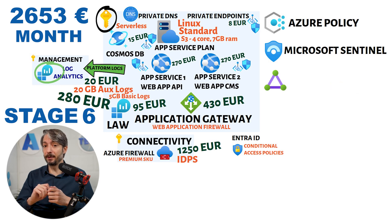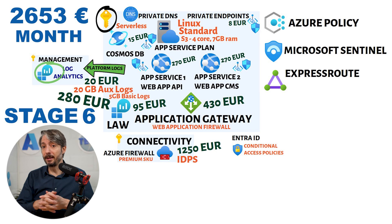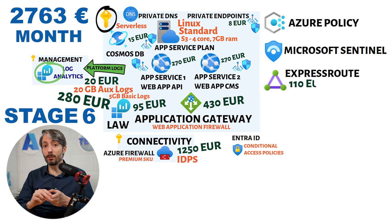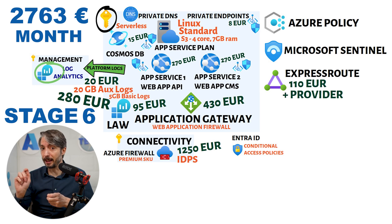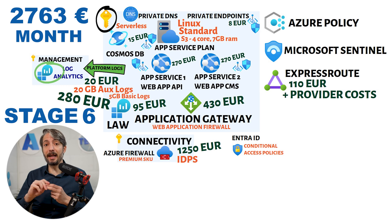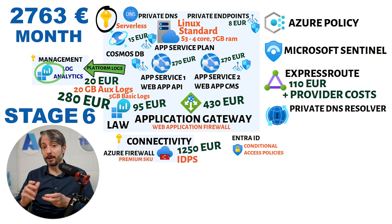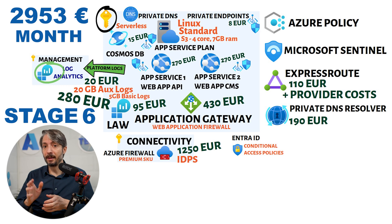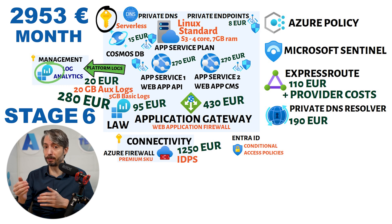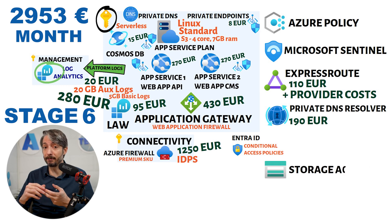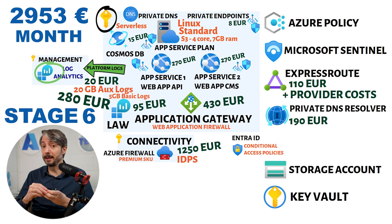Think about connectivity with on-premises using a standard Azure ExpressRoute — a metered plan with only one circuit at 100 Mbps is 110 euros per month, excluding the cost you pay to the ExpressRoute provider. We should also be thinking about Azure Private DNS resolvers — if you set them up with a couple of rulesets, it lands you about 190 euros per month. And of course, we cannot forget all the key resources: some have minimal costs depending on what options you choose, such as storage accounts and key vaults. Lastly, do not forget about backup and redundancy.